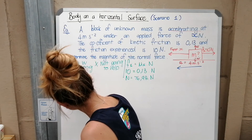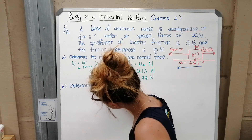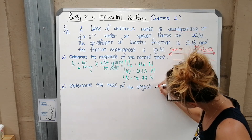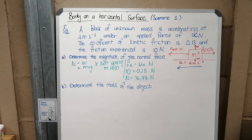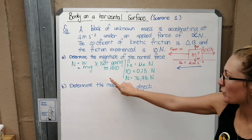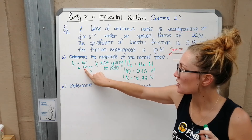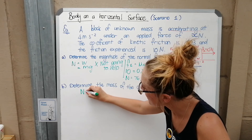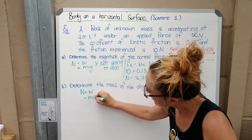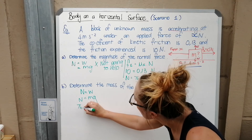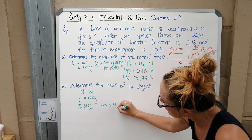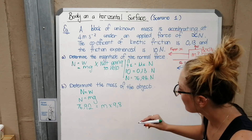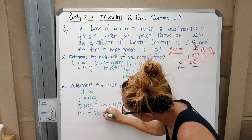Part (b): determine the mass of the object. Now that we know the normal force, we can use N = W = mg. Substituting 76.92 = m × 9.8, we get m = 76.92 ÷ 9.8 = 7.85 kilograms.